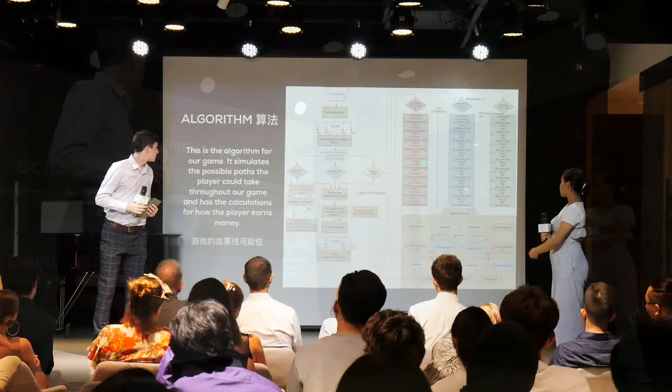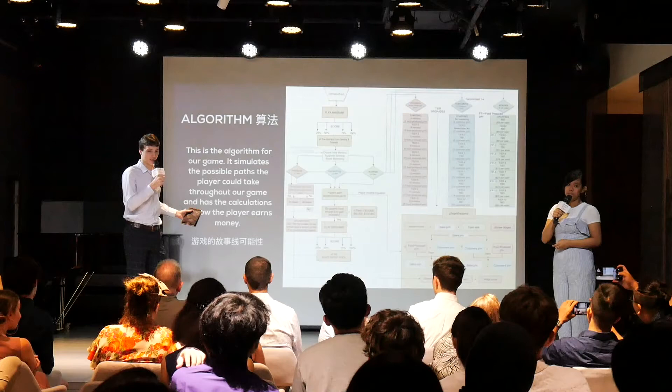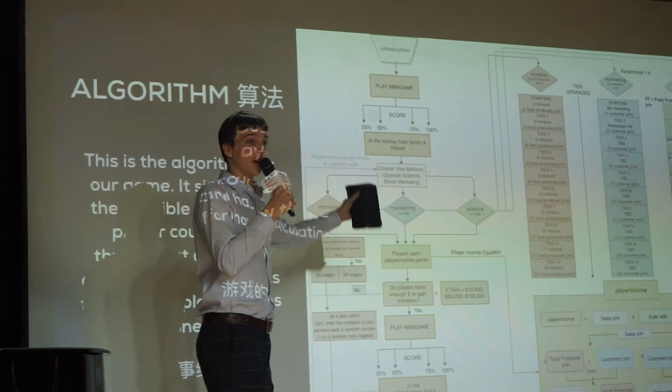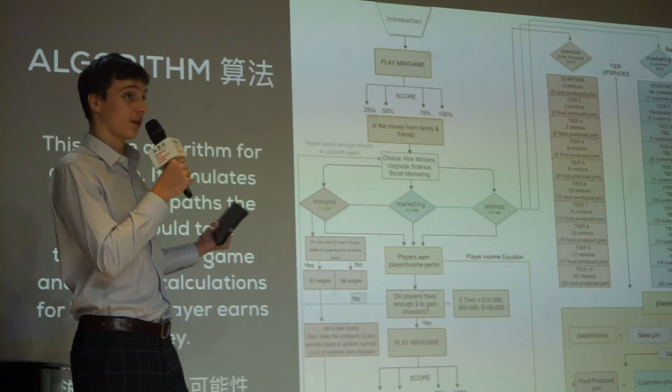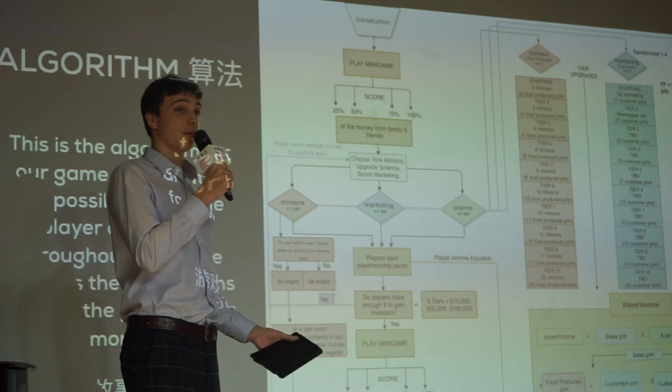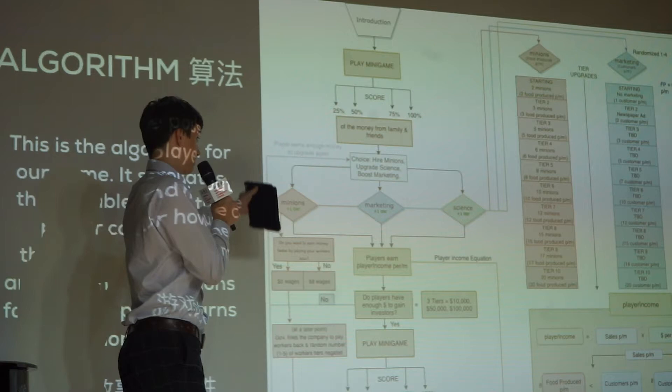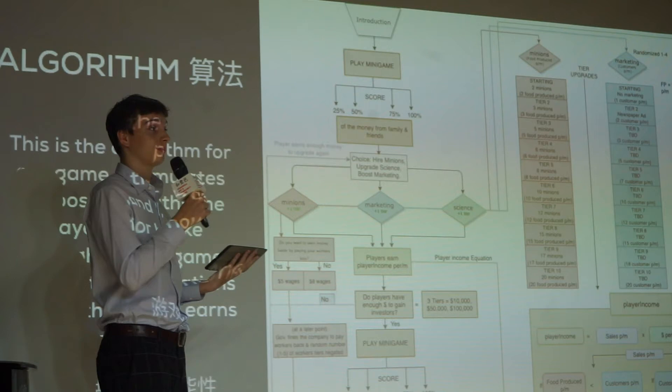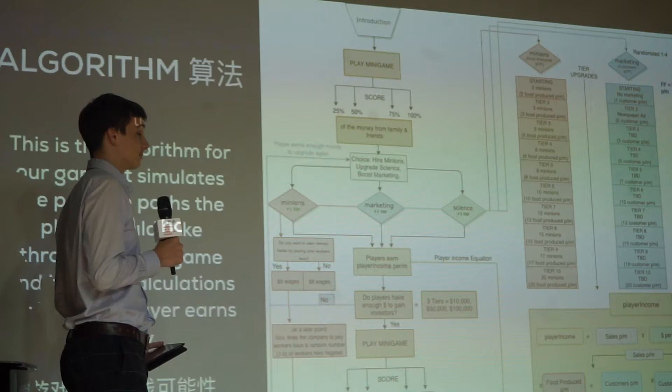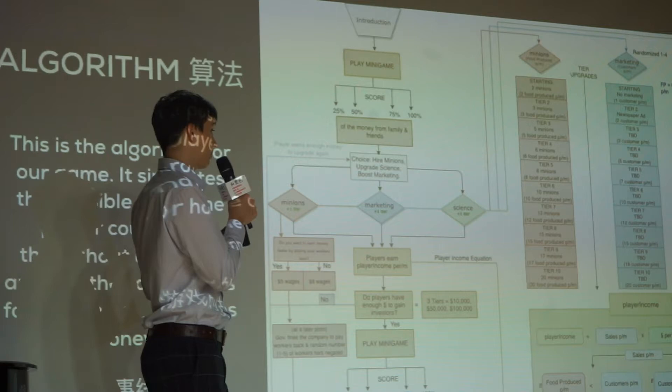Here is the algorithm, which might look a little intimidating, but I'll break it down. The user is introduced to the game and their player. They start off with a minigame simulating the pitching process, getting a certain amount of money from family and friends depending on how well they do. Next, they move on to the core aspect of the game with three choices: putting money into production gets faster output, putting money into marketing gets more customers, and putting money into science makes their food sell for more.